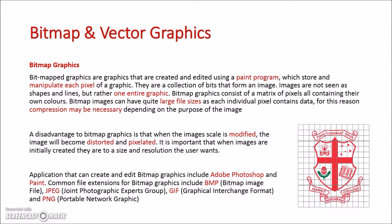Applications used to create bitmap graphics include Photoshop and Paint. We have the file extensions of BMP, which is basically just a raw graphic in a quite large file size, and then JPEG, GIF, and PNG for compressed images. Images are great in bitmap form when we're either taking photos or putting images onto a website.